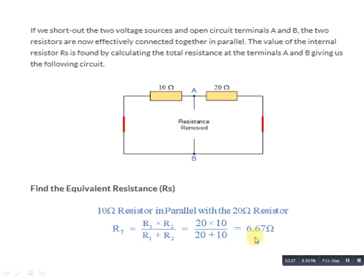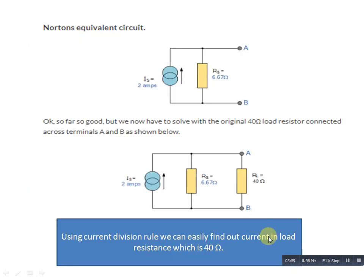In the Norton equivalent circuit, the current source — denoted as IS or IN — has the value of 2 ampere as calculated earlier. In parallel with it, the Norton resistance is connected with a value of 6.67 ohm. At the AB terminal, we need to find the current through the load resistance, which we had previously removed — that is the 40 ohm load resistance — which is now reconnected.